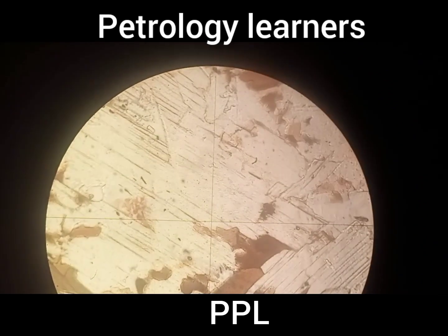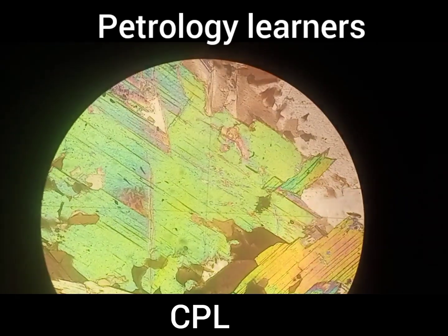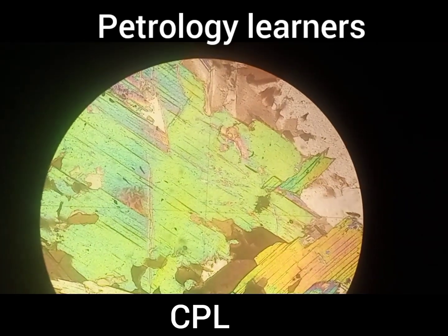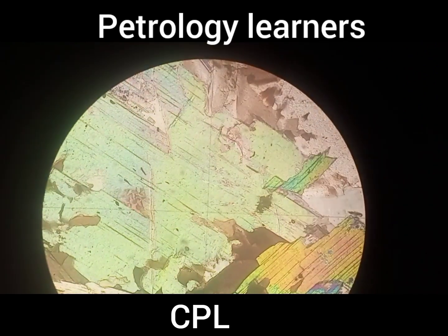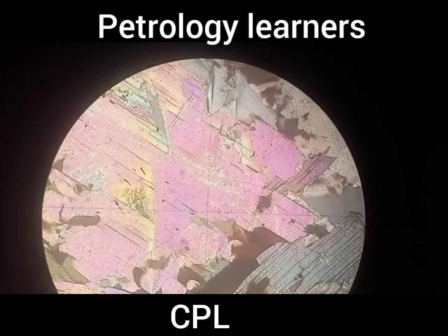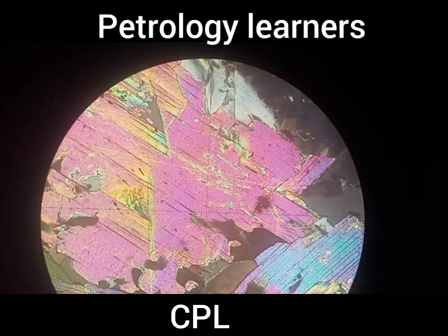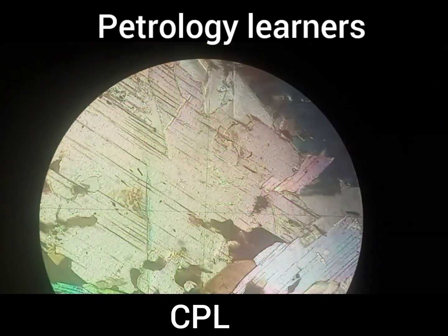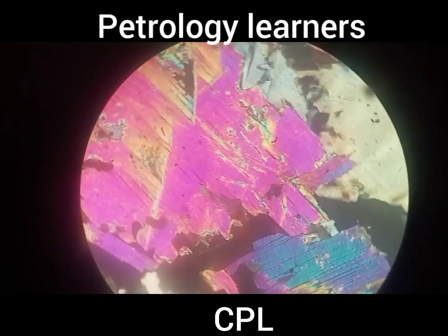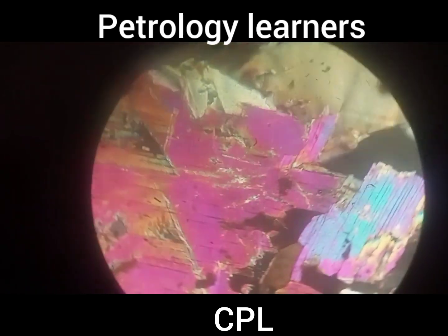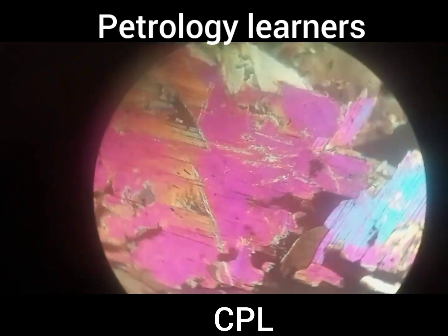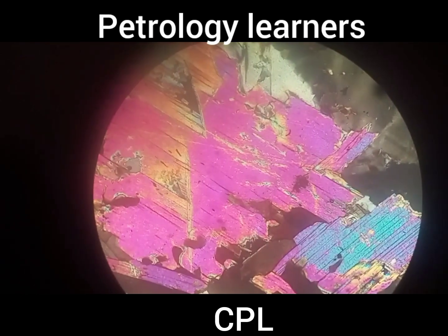In cross polarized light, muscovite is an anisotropic mineral, meaning it changes its color on rotation of the stage — that is known as extinction. The extinction angle of muscovite is from 0 to 3 degrees.